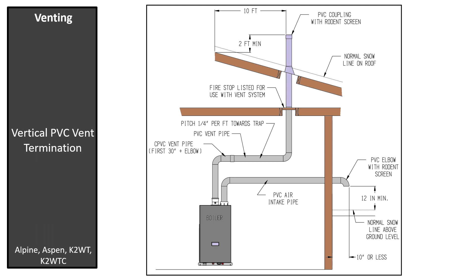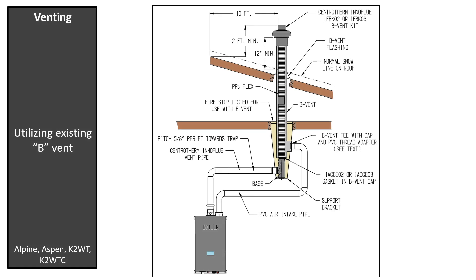As another option of vertical venting, we can run a single pipe through the roof and the intake through the sidewall. When any type of vertical venting is applied, the vent termination must be two feet higher than anything within 10 feet horizontally. Using an existing B vent for venting and air intake, use a polypropylene flexible pipe and kit numbers referenced in the charts in the I&O manual to complete the installation.